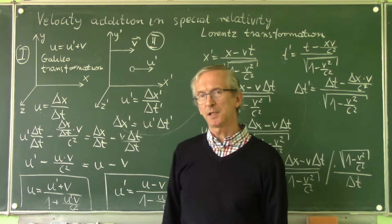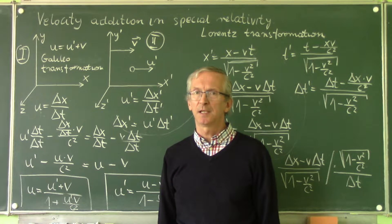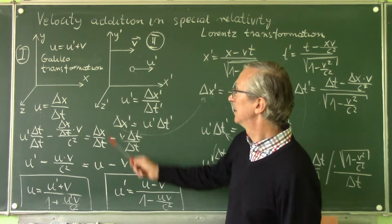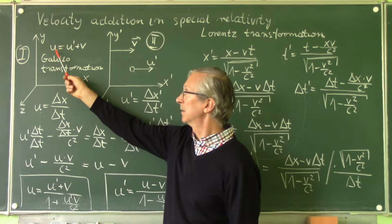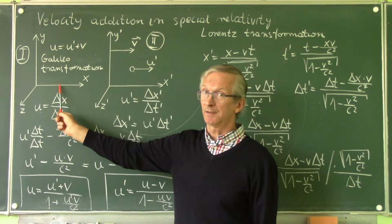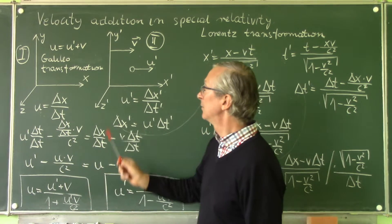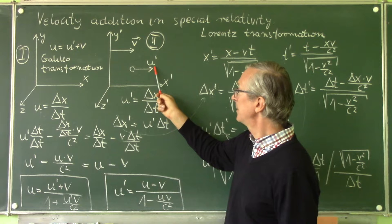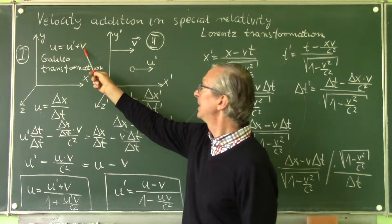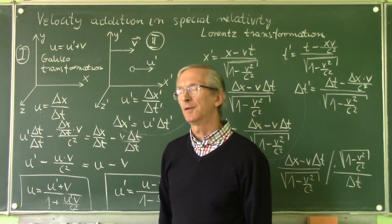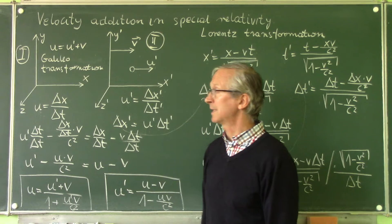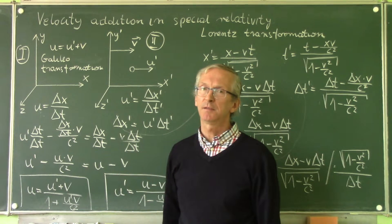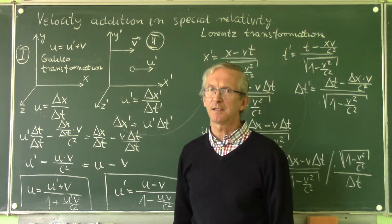If we believed in a Galilean character of transformations, the answer for this question would be very simple. The velocity of this object measured in the first frame of reference would be just the velocity measured in the second frame of reference plus V. We know that this equation is not true. It is very easy to prove.